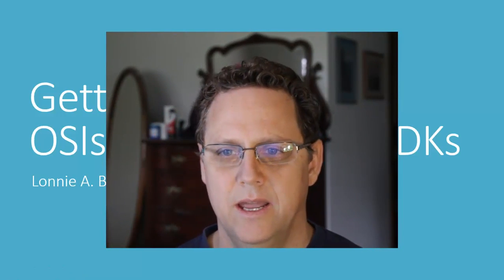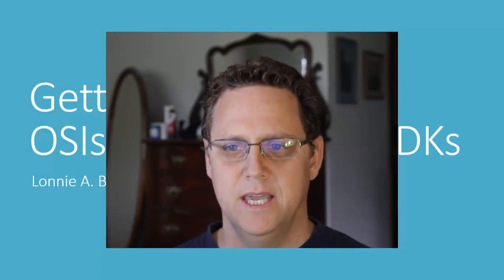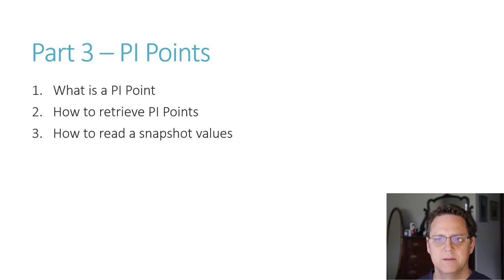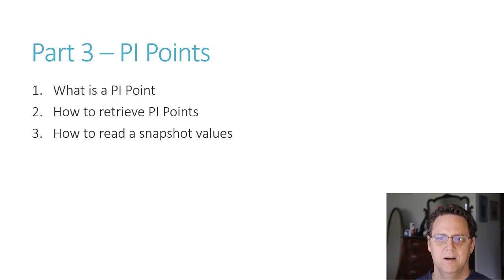Hi again everybody, this is Lonnie Bolling and this is going to be Part 3 of my series on getting started with the PI System SDKs, specifically how to use the AF SDK. So hopefully you've gone through the first couple of parts and things are rolling along and you're having some luck connecting your PI System. Now we really need to get down to business and start doing something for real. In this Part 3, I want to talk about PI Points, what PI Points are, how we can find PI Points in our system, and then how we can read some values.